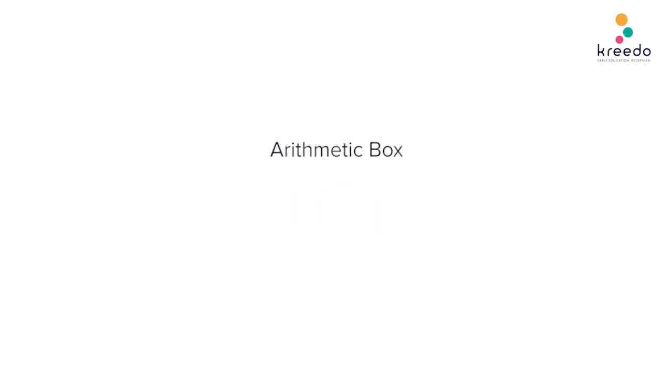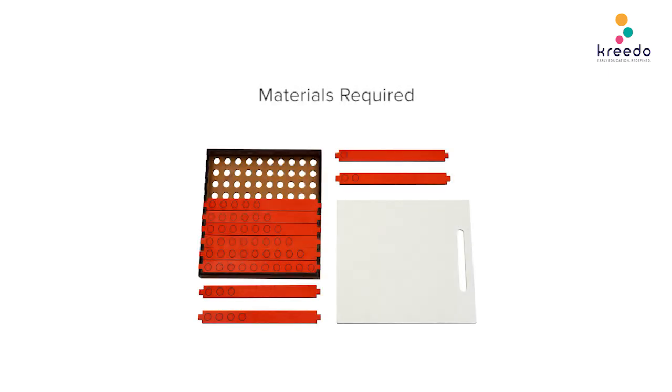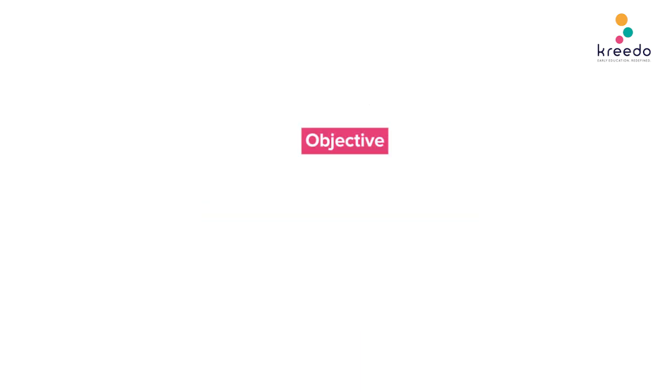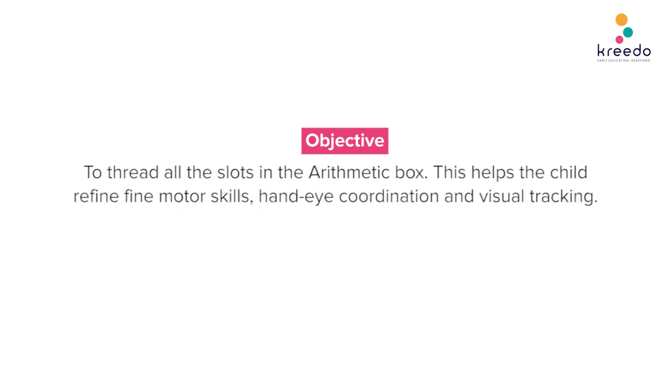Arithmetic box Game 4: Threading. Materials required: Arithmetic box. Objective: To thread all the slots in the arithmetic box. This helps the child refine fine motor skills, hand-eye coordination, and visual tracking.